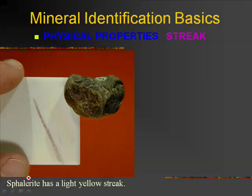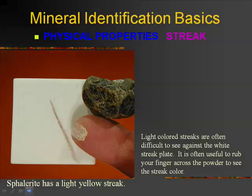Some dark minerals will have a light streak. For example, sphalerite, which is the ore of zinc, has a light yellow streak. You could either use a dark tile, or just take a look at the powder itself and you'll notice it has a very light yellow color despite the color of the mineral. A great way to tell gold from fool's gold is to look at the streak — the streak of gold is gold, the streak of fool's gold is gray.